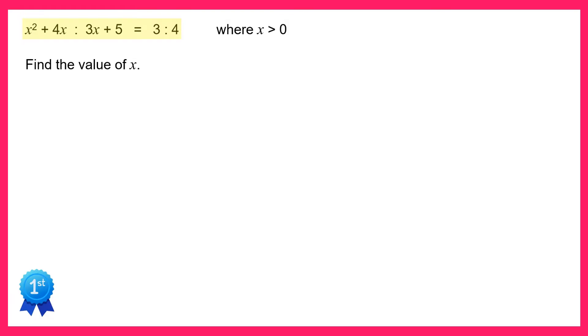What I'm going to do is take four lots of the left part of the ratio, so four lots of x squared plus 4x, and I'm going to write this is equal to three lots of the right hand side of the ratio, so three lots of 3x plus 5.